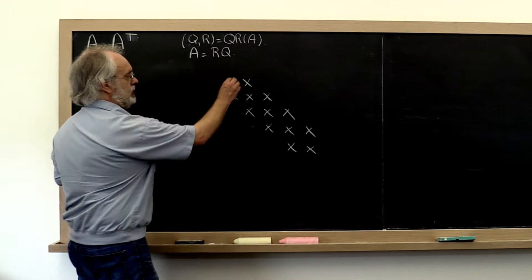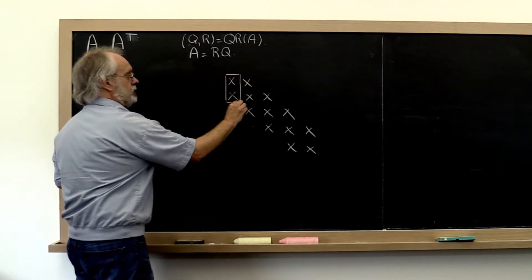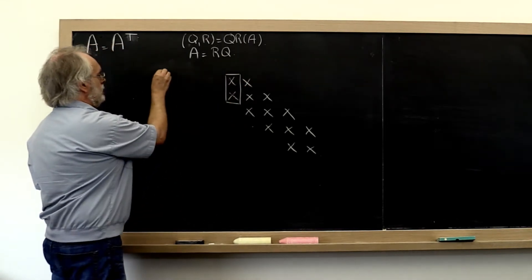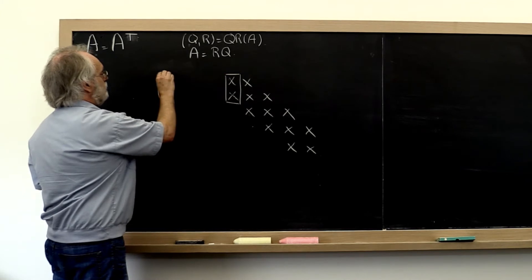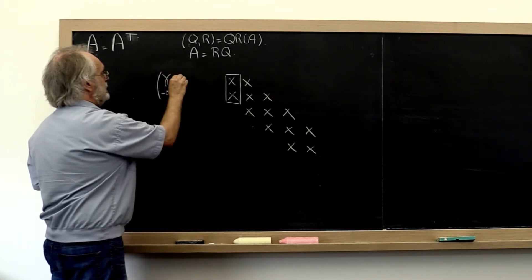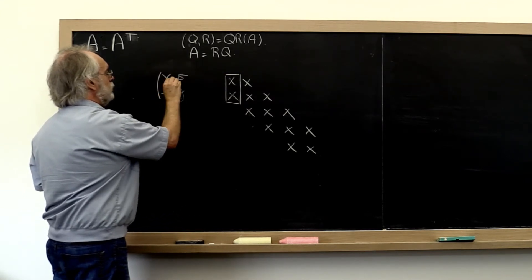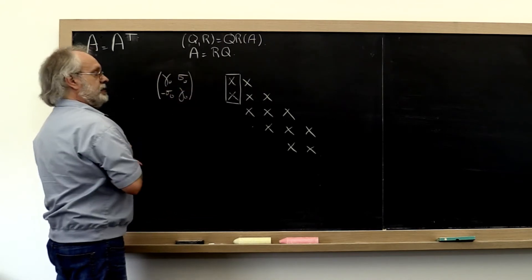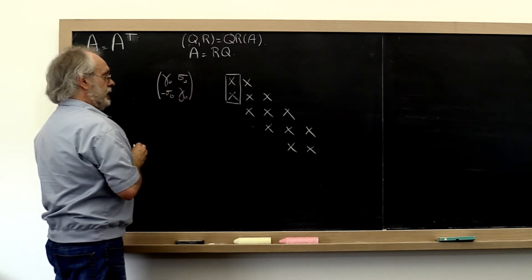We can now compute the Givens rotation off of these two entries. Let's call that gamma minus sigma, sigma gamma. We'll put zeros here to indicate this is in the first iteration of what we're doing here.